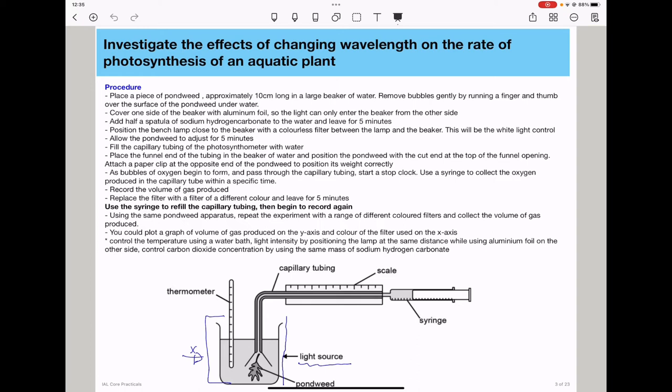In this experiment, some variables have to be controlled. You can control temperature using a water bath. Because here we are varying wavelength, temperature has to be constant, so you need to do preliminary experiments in order to know which temperature is going to give you the best results and perform all experiments at that specific temperature. And you will use a water bath to ensure that the temperature doesn't change. Light intensity can be controlled by positioning the lamp at the same distance while using aluminum foil on the other side.